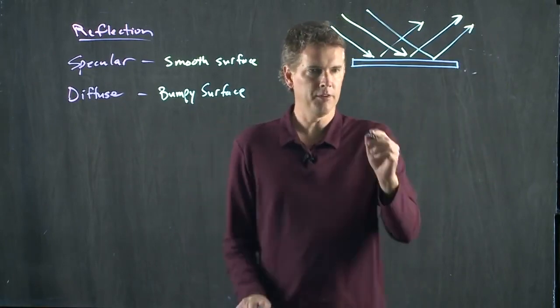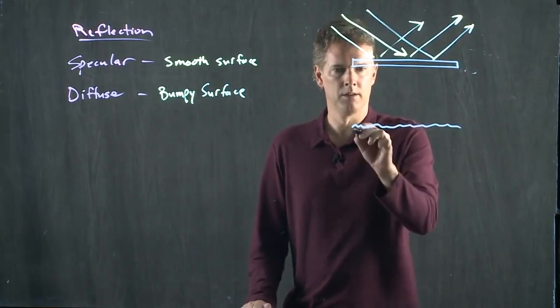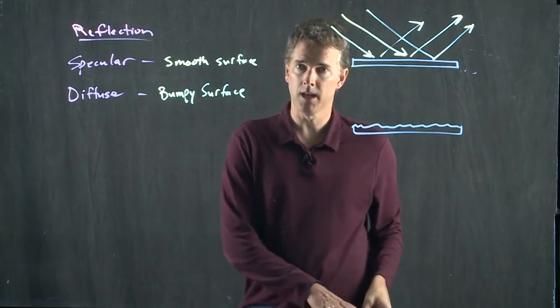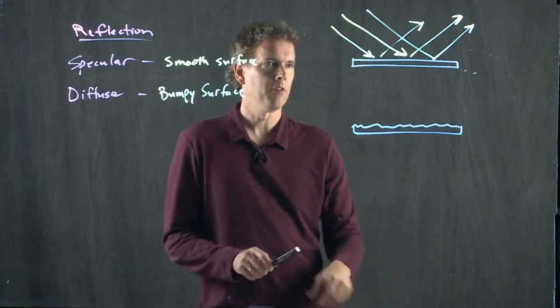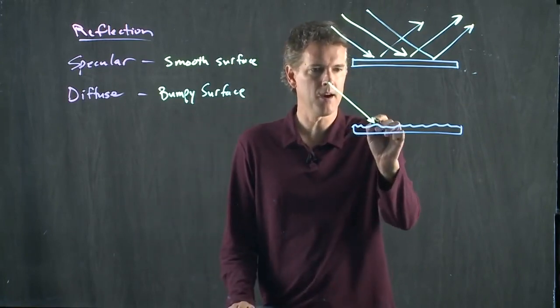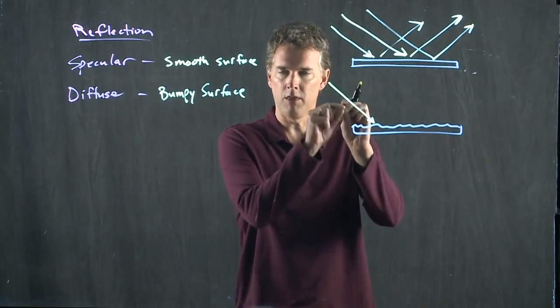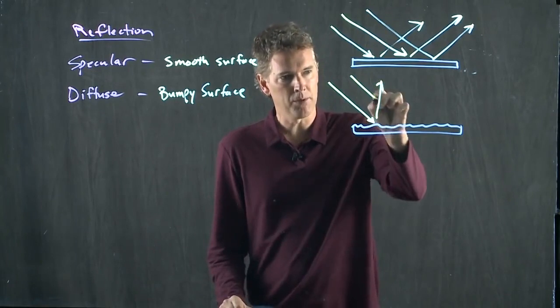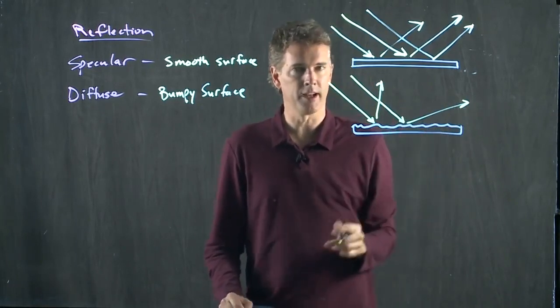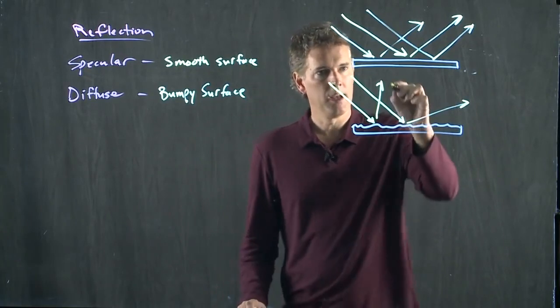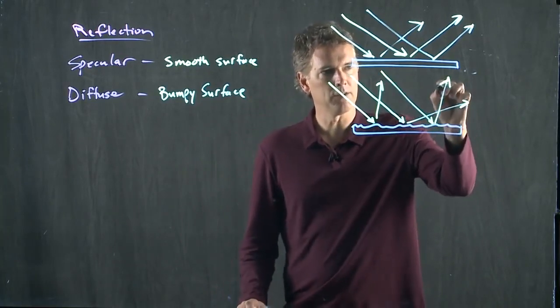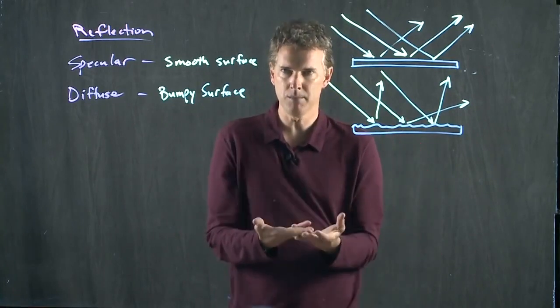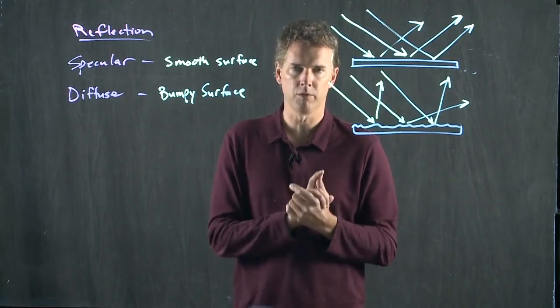But a bumpy surface has all these indentations or water droplets on it, like in the case of this mirror. And so when a ray comes in, it hits there, it's going to suffer the law of reflection at that point. The next ray that comes in will suffer the law of reflection at some other angle. And so all these incoming rays get scrambled into all these other directions. And that's why you can't make out an image in a diffuse reflecting mirror.